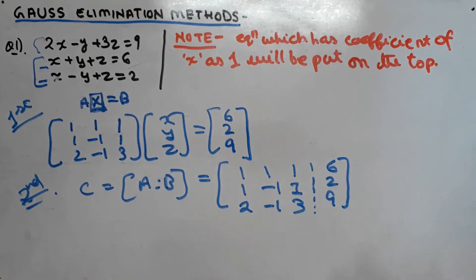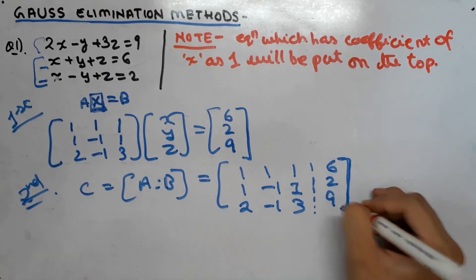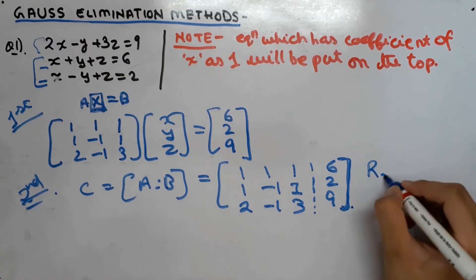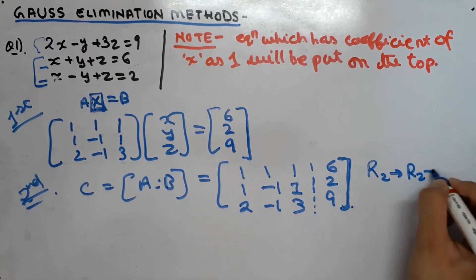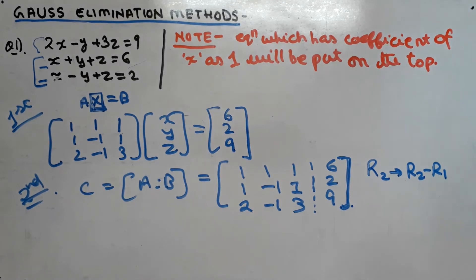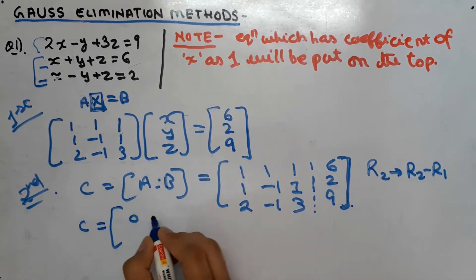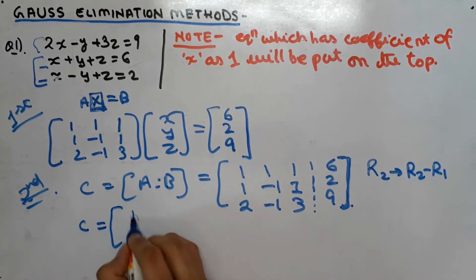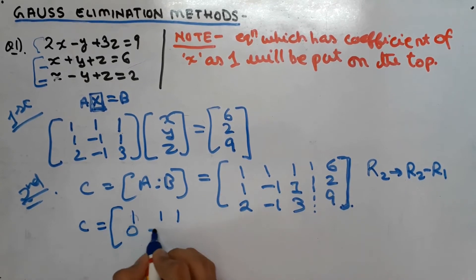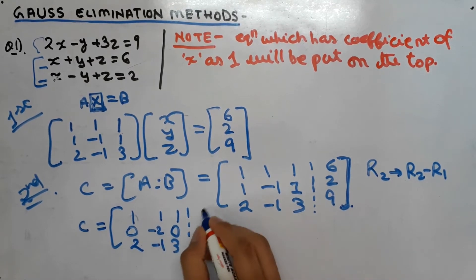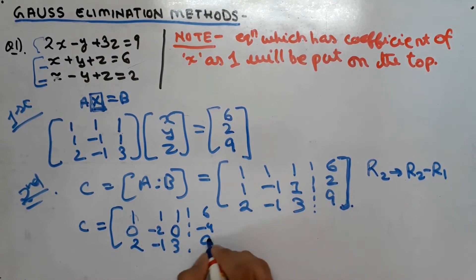Please pay attention as this is a very important step. First we do a row transformation: R2 → R2 - R1. Our matrix C becomes: row 1: 1, 1, 1; row 2: 0, -2, 0; row 3: 2, -1, 3, with the B column becoming 6, -4, 9.